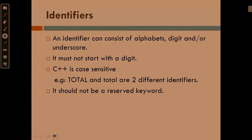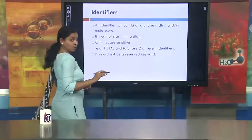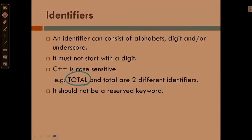C++ is a case sensitive language, meaning whatever we have mentioned in small letters carries a different meaning. For example, the word 'total' written in capital letters and 'total' written in small letters — though they look the same, C++ is case sensitive, so these two are two different identifiers and carry different meanings.